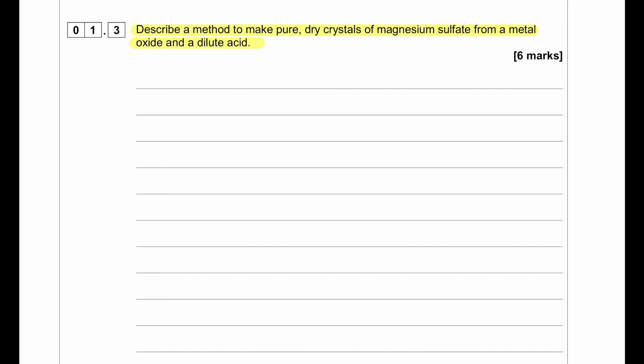Filter the solution using filter paper and a funnel to remove the excess magnesium oxide. Then heat the solution in an evaporating basin to its crystallization point and leave it to cool down so it has enough time to crystallize. At lower temperature, water has less solubility for salts, so the salt will simply crystallize. Once crystals are formed, decant the liquid off and pat dry the crystals using dry filter paper to get pure dry crystals of magnesium sulfate.